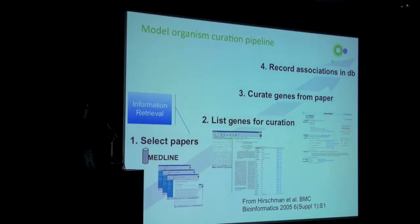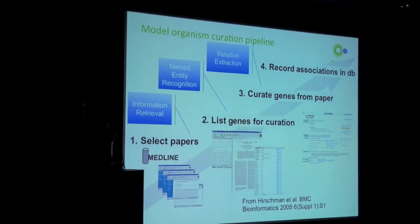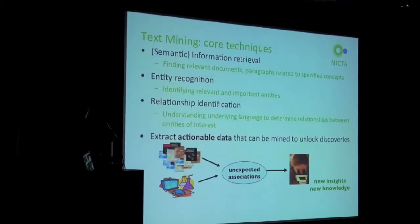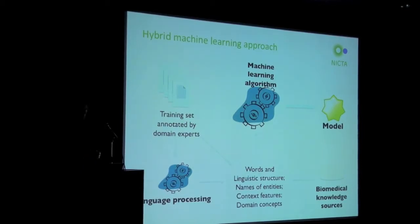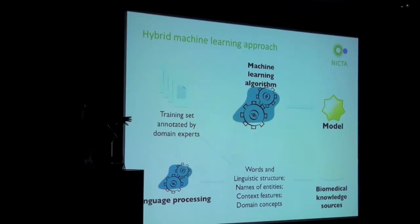Selecting papers is essentially the computational task of information retrieval. Listing genes for curation involves named entity recognition. To curate and assign function to a gene, for instance, we would like to do relational or event extraction, and ultimately record it somewhere computationally. The core techniques we're using involve each of those things, and ultimately what we're trying to do is extract actionable data from the unstructured text that can be mined to unlock discoveries. A lot of work in biomedical NLP takes advantage of hybrid machine learning approaches, and we depend heavily on training sets annotated by domain experts.